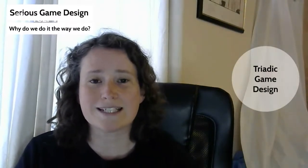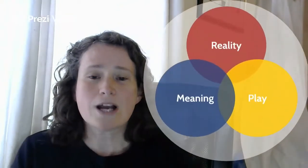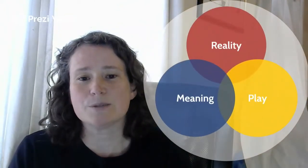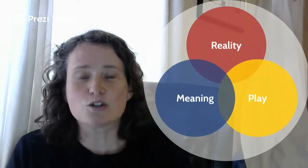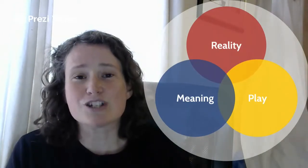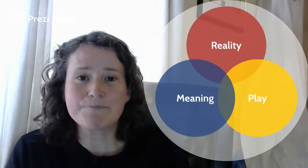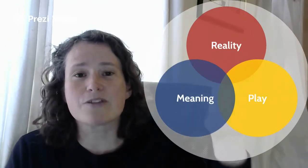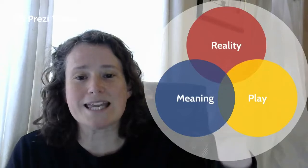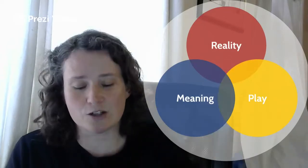This short video is about why we design serious games in the way that we do, using a method called triadic game design. Triadic game design has three elements: reality, meaning, and play. All good serious game design that results in an effective serious game has to include all aspects of these three elements, and it takes place here in the centre of this diagram.